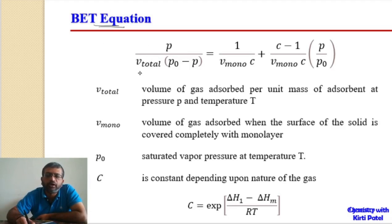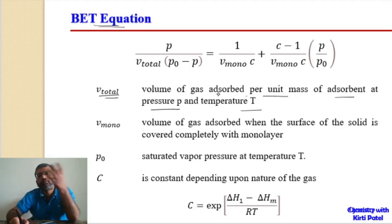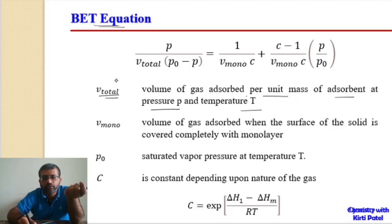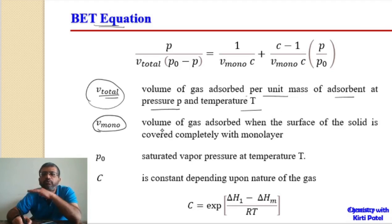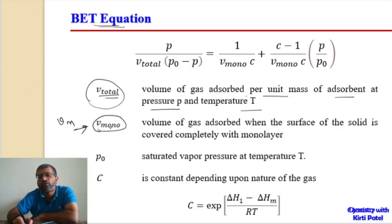The BET equation is: P / (V_total × (P₀ − P)) = 1/(Vm × C) + [(C − 1)/(Vm × C)] × (P/P₀), where V_total is the volume adsorbed per unit mass of adsorbent at pressure P and temperature T — the total volume of gas absorbed in forming a multi-molecular layer. Vm is the volume required for formation of a monolayer at temperature T and pressure P. P₀ is the saturated vapor pressure at temperature T, and C is a constant.